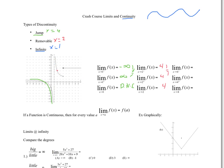The limit as x goes to four: as we go to four from the left side — values less than four — the y value is going to two. As we go to four from the right, the y values are going to five. Are these two things equal? No — so the limit does not exist.